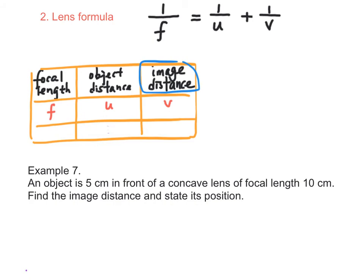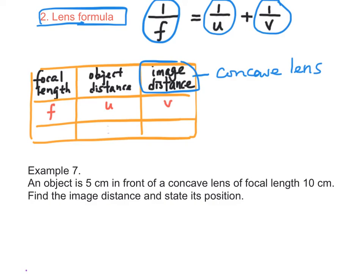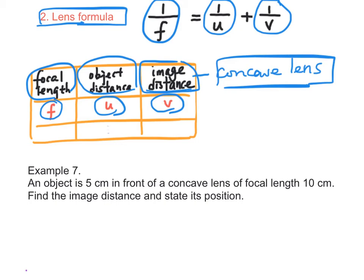Another way to find the image distance of a concave lens is by using the lens formula: 1 over f equals 1 over u plus 1 over v, where f is the focal length, u is the object distance, and v is the image distance. For a concave lens, the focal length is substituted using a negative sign, the object distance is substituted with positive values, and the image distance will be found with a negative sign, which means that the image is virtual.